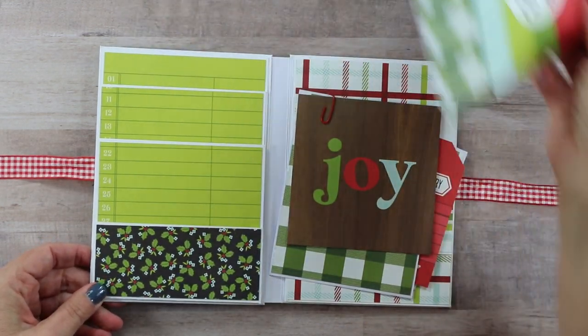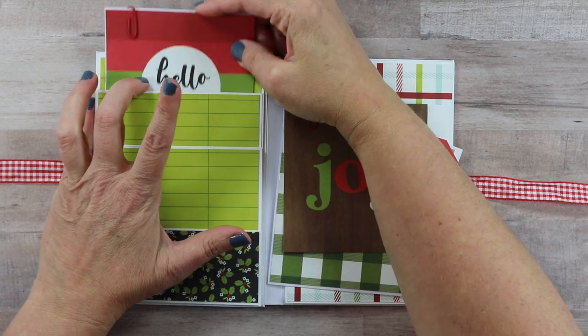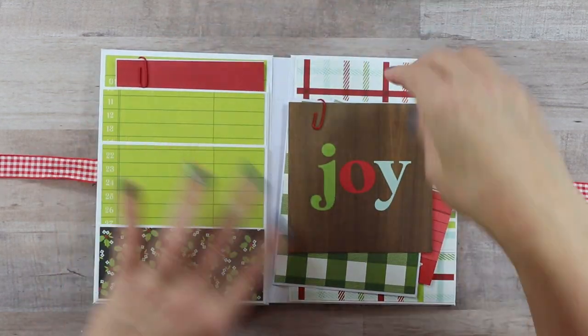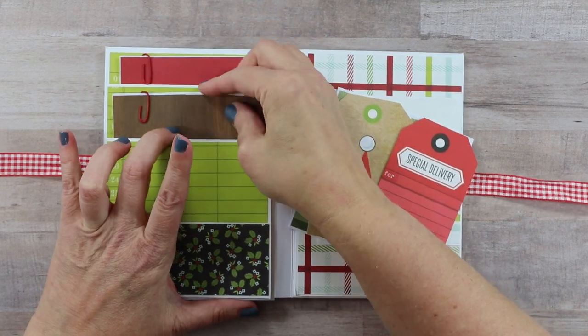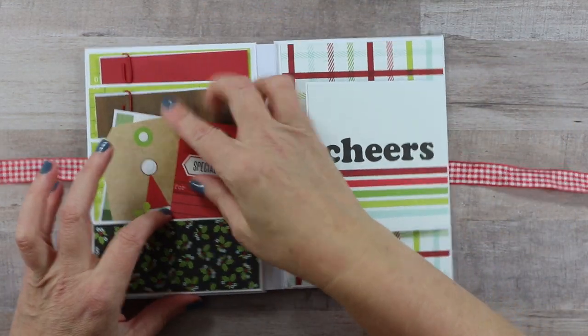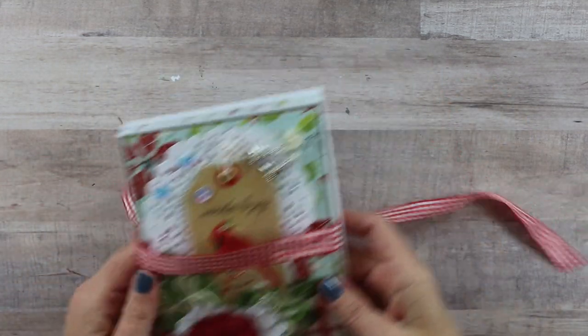So each of these pockets is going to have an insert and a cut-apart image from the collection, and then all of these will fit nicely into these pockets. There's a little additional room for some flat keepsakes and mementos, and so this all folds up nicely into our folio. If you are interested in creating a folio like this, then stick with me and we will make it.